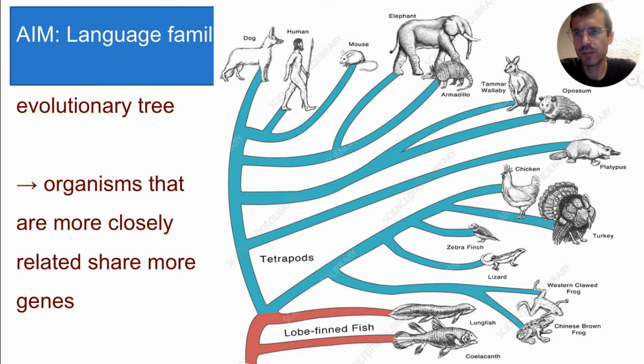You may have seen an evolutionary tree like this one. It shows when organisms diverged and how closely related they are to other organisms. For example, this one shows that dogs and humans diverge from a common ancestor in the near past, while humans and fish diverge from a common ancestor much longer ago. So we can conclude that humans and dogs share more genes in their DNA and are therefore more closely related than humans and fish.